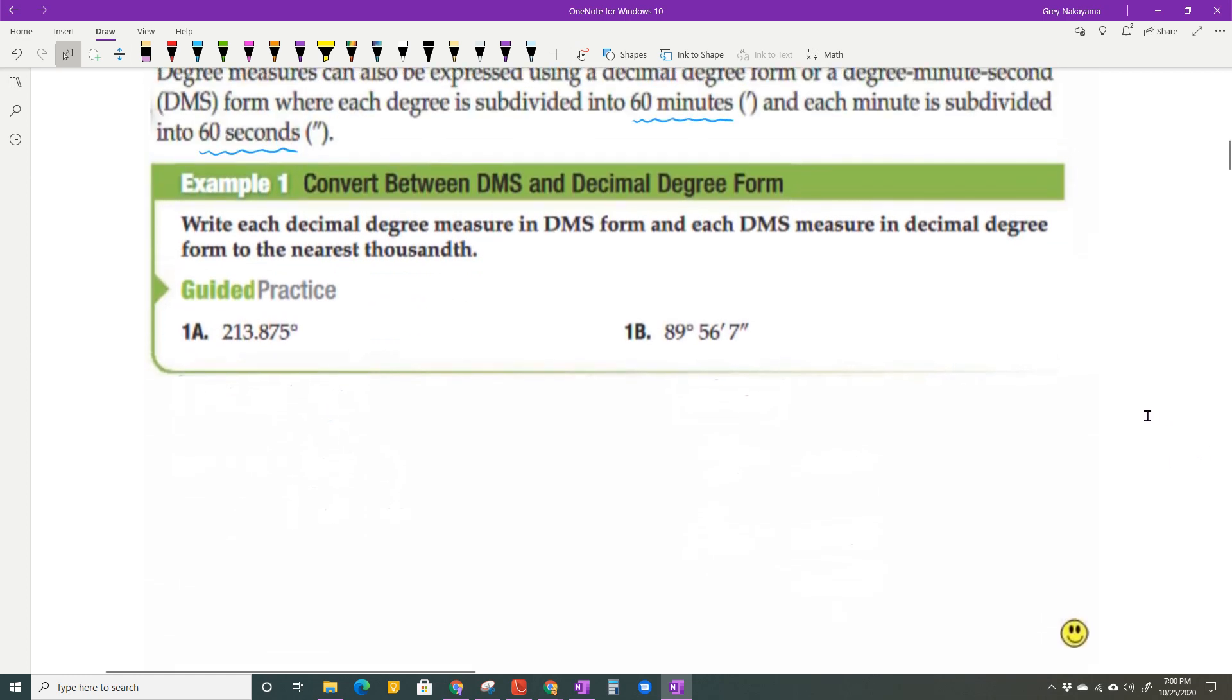So this first one that we're going to do, you need to be able to convert back and forth. So I have one that is given to me in degrees, and I'm going to change it to the DMS form, degrees, minutes, and seconds. So when you do that, this says 213.875 degrees. Well, that first part of 213 is not going to change.